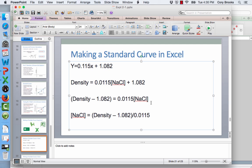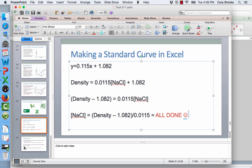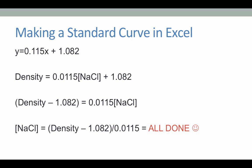So if I put in my density of my unknown sodium chloride that I determined by my experiment by taking its weight and its volume, then subtract 1.082 and divide that subtraction by 0.0115, I will know my sodium chloride concentration in percent. And that will conclude the objective two of experiment two which was to determine the percent of sodium chloride in an unknown solution.